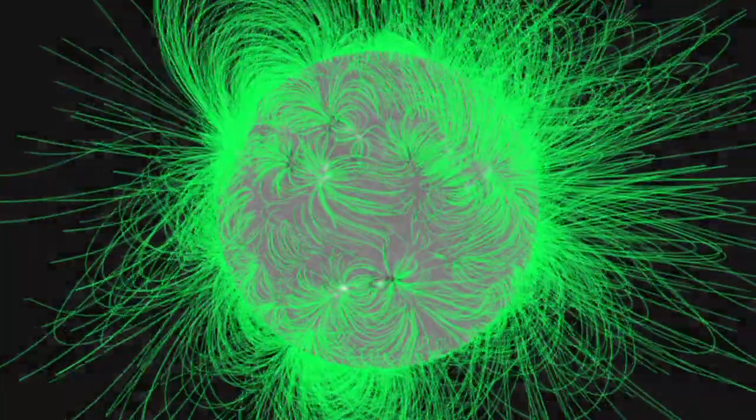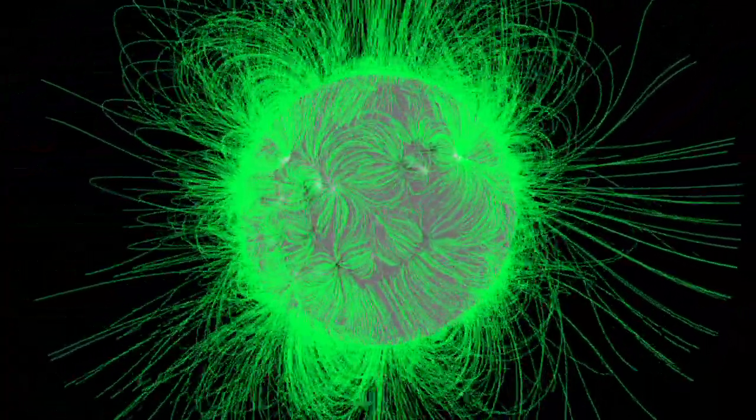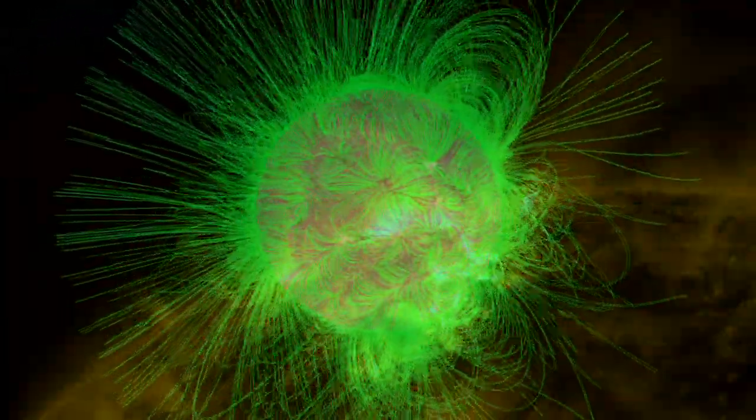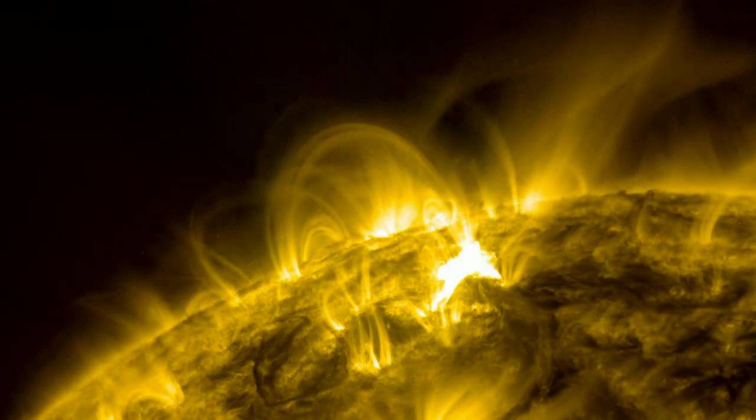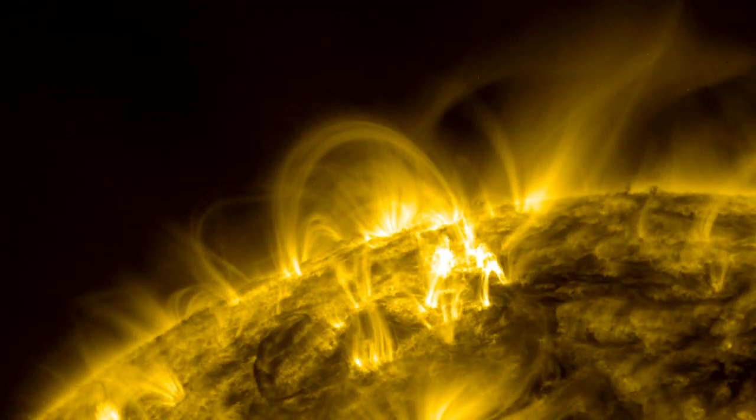While we cannot see magnetic field lines, NASA's SDO can observe solar particles that move along them, tracing out giant arcades of magnetic loops on the Sun's surface.